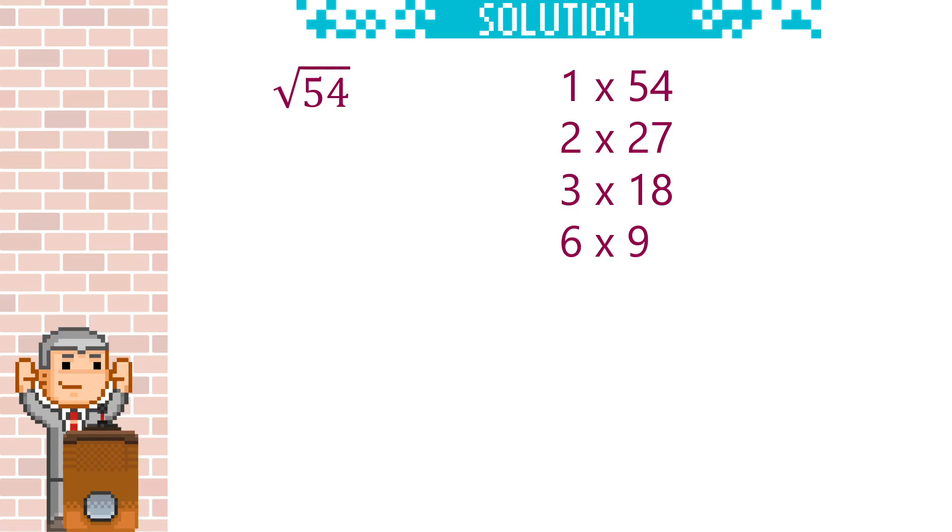Next we select the factor pair with the highest square number. The highest square number here is 9, so the factor pair will be 6 and 9. Then we're going to write the 6 and the 9 as surds, or as square roots, but put the square number first. So it's going to be square root of 9 times square root of 6. The square root of 9 is 3, so it's going to be 3 times square root of 6, but with surds we don't need to put the times sign. So the answer is just going to be 3 root 6.